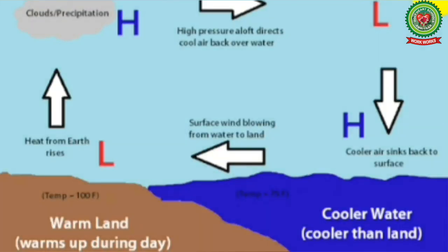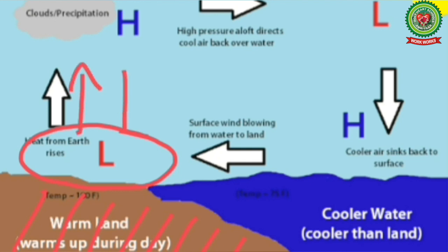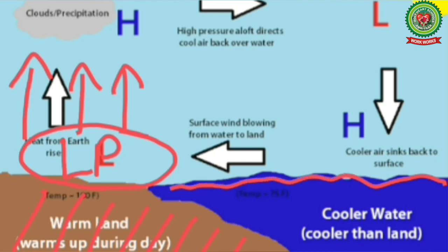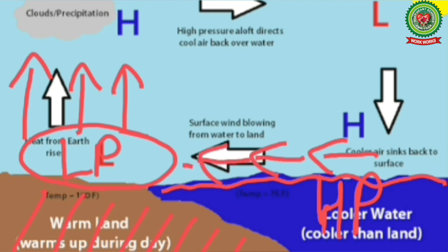During daytime, the land is intensely heated due to conduction. The air above the land becomes warm, expands, becomes light, and starts rising in the form of air currents, creating a low pressure over the land. On the other hand, the sea is cooler and the air above the sea is heavy, so there is high pressure on the sea during daytime. Cool winds start blowing from the high pressure area of the sea to the low pressure area of the land. This wind is called sea breeze.